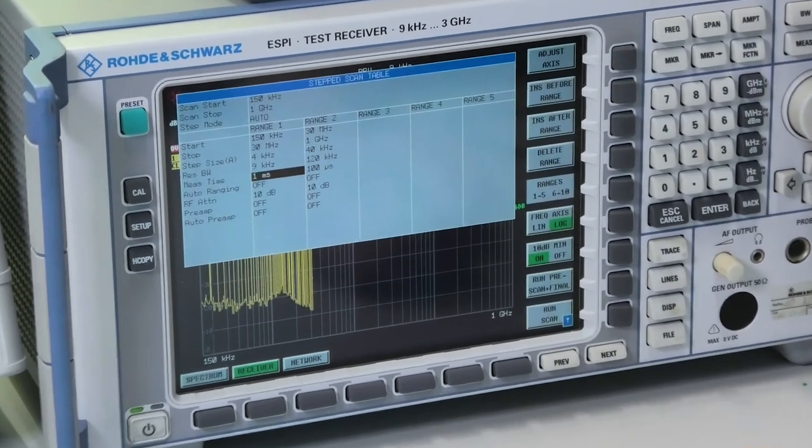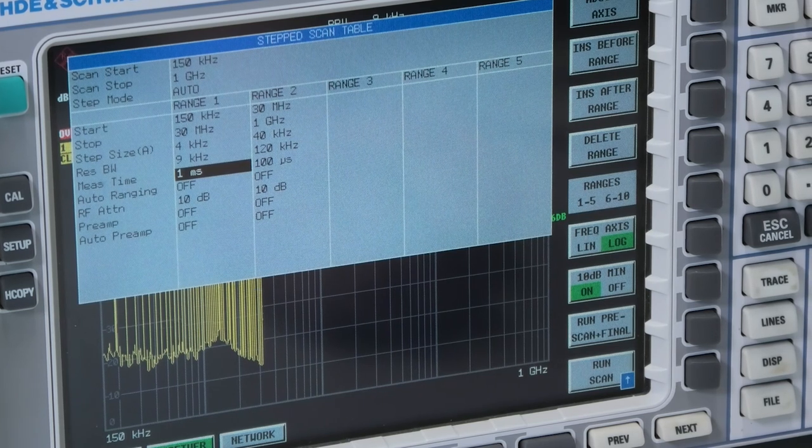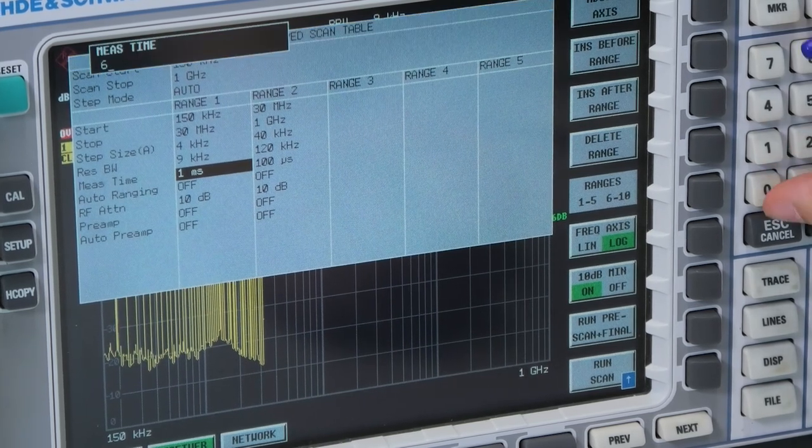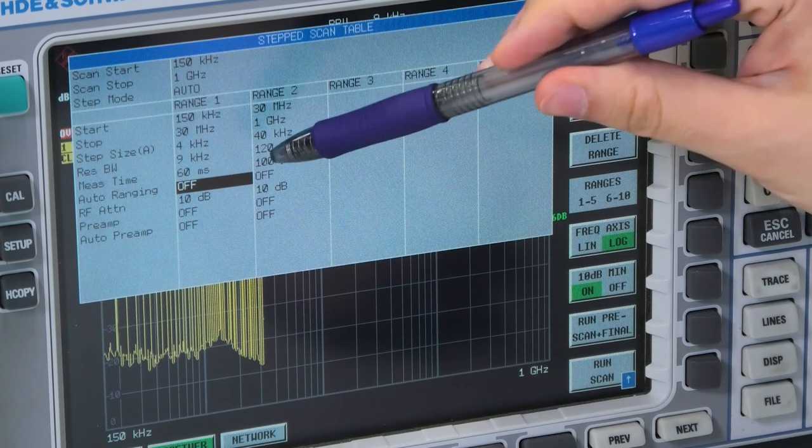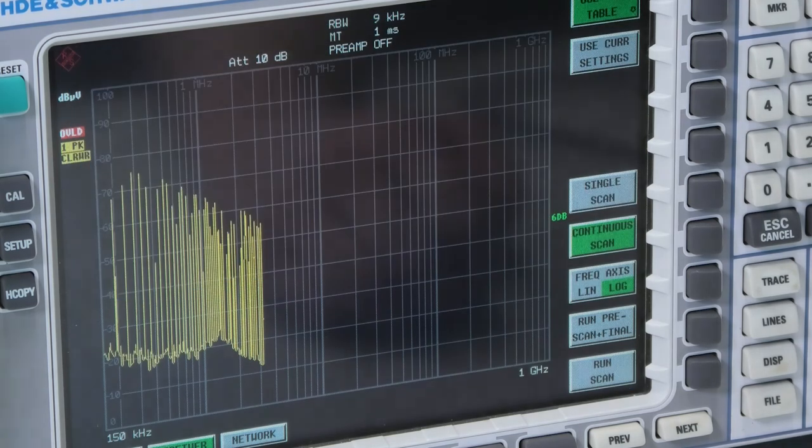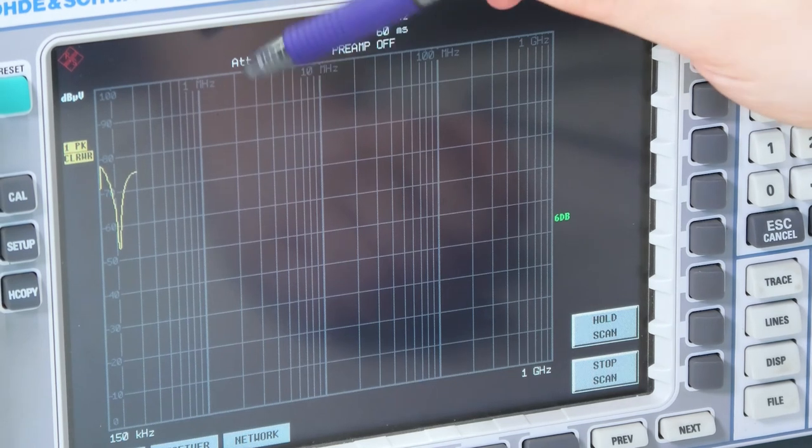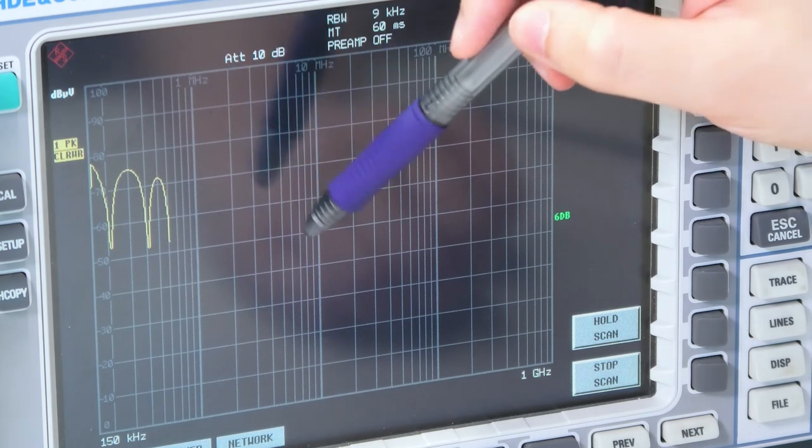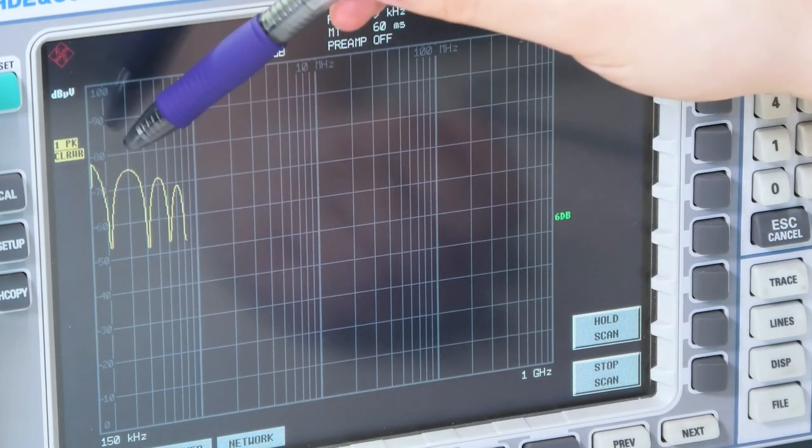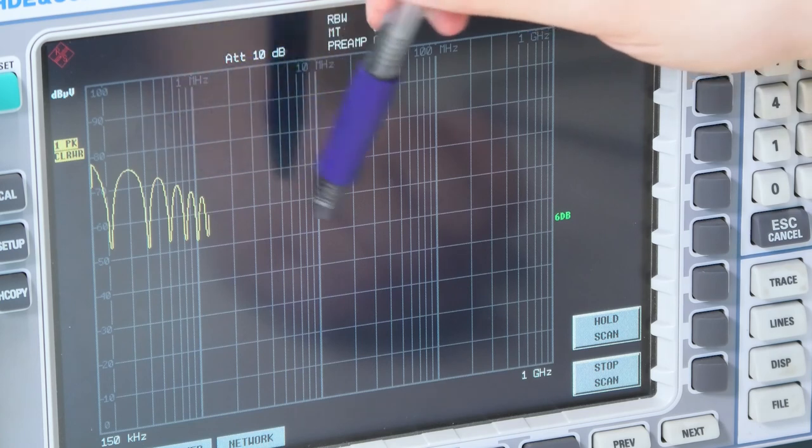So, now let's correct the error and set our measurement time to 3 times our cycle time of our DUT. So, 3 times 20 milliseconds is equal to 60 milliseconds. Okay. And now let's run the test again. And now we can see the nice shape of the sinc function as we have seen in the theory part. And we can also see here that the signal here is decreasing with 20 dB per decade.